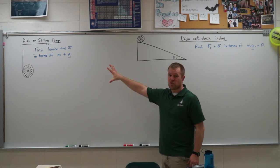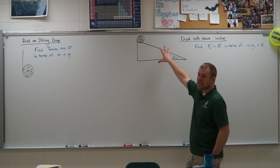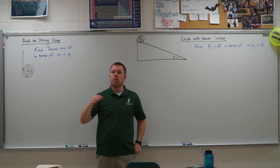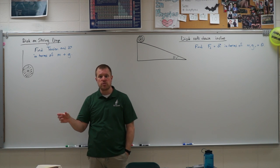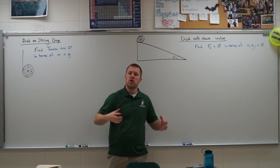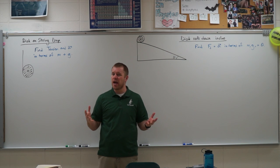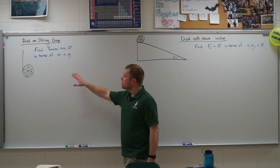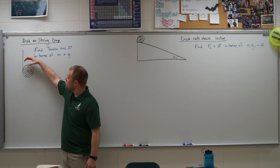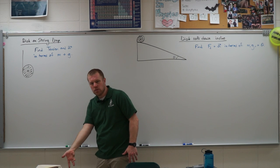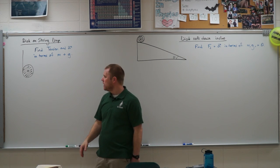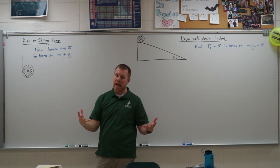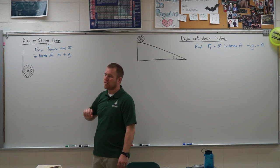We are going to look at discs on strings falling and discs on inclined planes rolling. These two problems may look very different, but when we solve them using Newton's laws in linear motion and Newton's laws in rotational motion, we see that they solve very similarly. I'm going to set these two up and solve them using Newton's second law. Our first one: we have a disc on a string that is going to be allowed to unroll - you can think of it like a yo-yo falling. We are going to find the tension and the acceleration of this disc in terms of its mass and the acceleration of gravity.